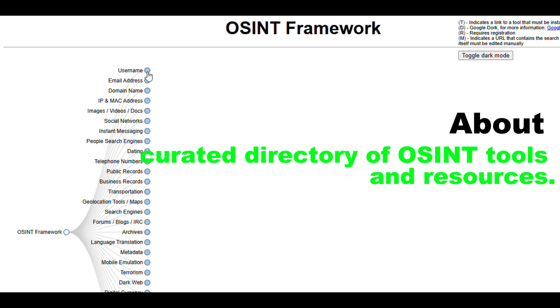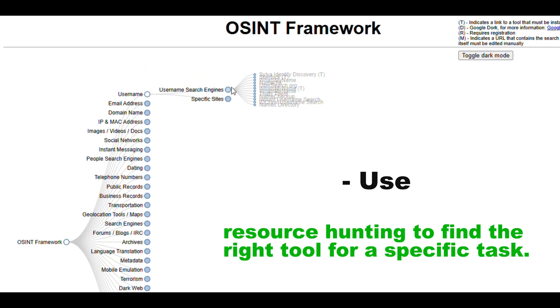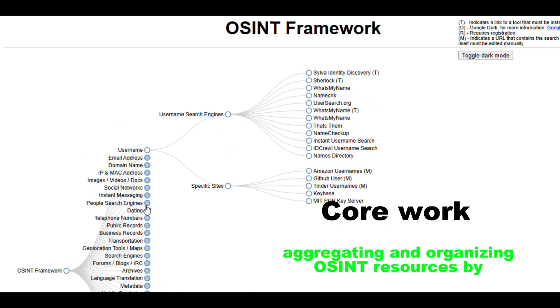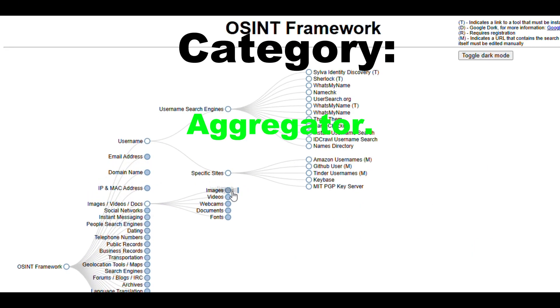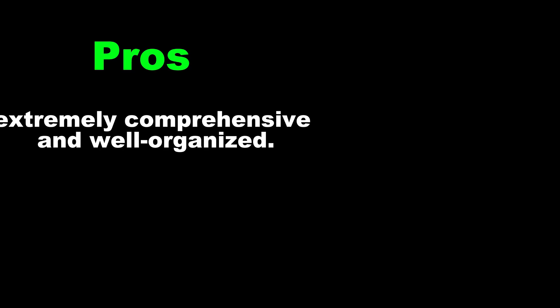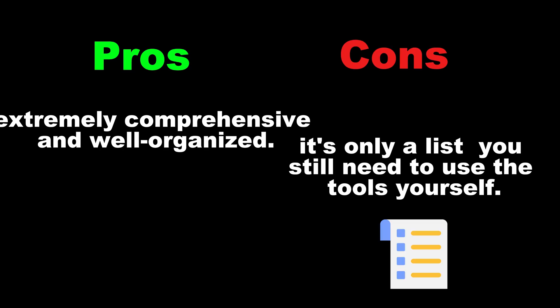Tool 17: OSINT Framework — a curated directory of OSINT tools and resources. Use: resource hunting to find the right tool for a specific task. Core work: aggregating and organizing OSINT resources by category. Category: aggregator. Pros: extremely comprehensive and well organized. Cons: it's only a list — you still need to use the tools yourself.